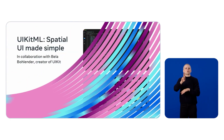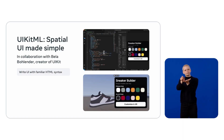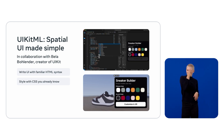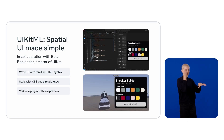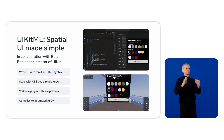For user interfaces — traditionally a major challenge in immersive development, requiring custom layout logic and heavy performance optimization — we addressed both by partnering with Bila Bolenda, creator of UIKit, to re-imagine spatial UI development. Together, we co-developed a spatial UI authoring language called UIKit ML. UIKit ML lets you author UI panels using HTML-like syntax and CSS, technologies you already know. We're also launching a VS Code plugin that shows a real-time preview of the UI panel as you type. Watch as I create a color selector panel — every change instantly appears in the preview.